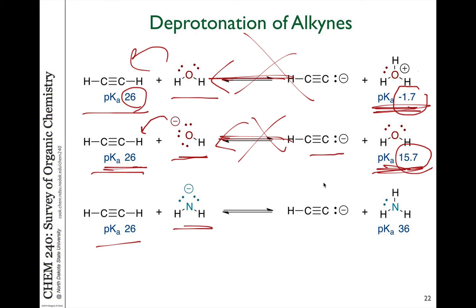However, when we look at an amide anion, NH2 minus as a base, it deprotonates this to form the carbanion and ammonia. And ammonia has a pKa of 36, which is 10 orders of magnitude less acidic than the alkyne. In this case, this is going to be a productive reaction moving to the right, and you can generate these acetylide anions quite easily using bases derived from nitrogen compounds.